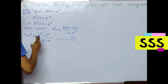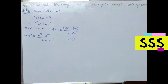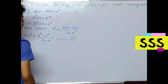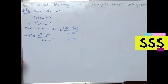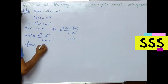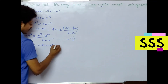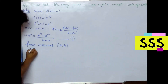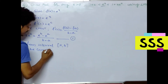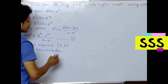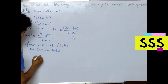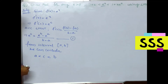If x is greater than 0, we have to find out a and b. From the closed interval [a, b], we consider according to Lagrange's Mean Value theorem that a is less than c is less than b.